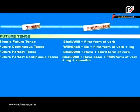In future perfect tense we have shall/will have plus third form of verb. Future perfect continuous: shall/will plus have been plus first form of verb plus -ing, plus since or for. This was all about tenses and their form used.